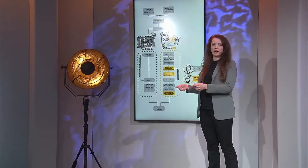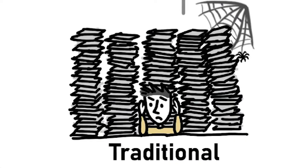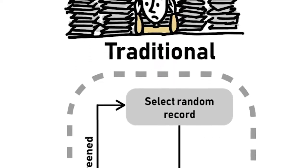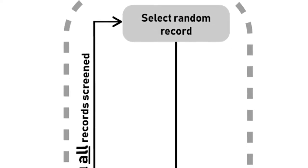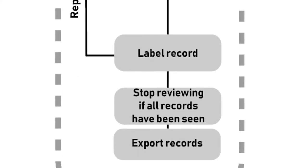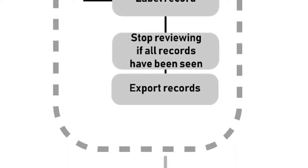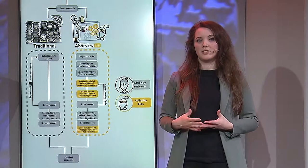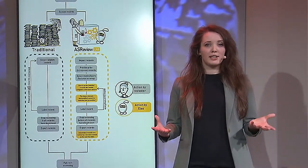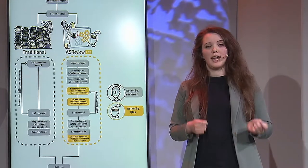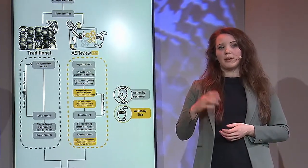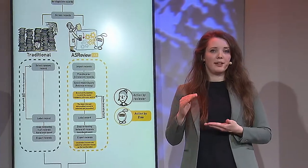In the traditional way, you grab a random record from the stack, screen it, and decide whether it's relevant or not. You repeat this again and again until you've seen the whole dataset — and remember, this might be thousands of papers. After screening them all, you can stop and export your records to start full-text screening.